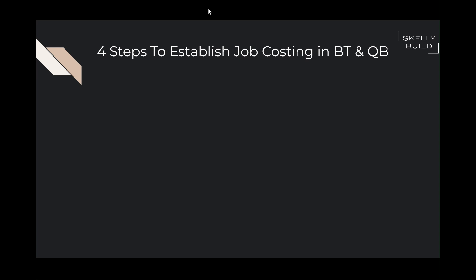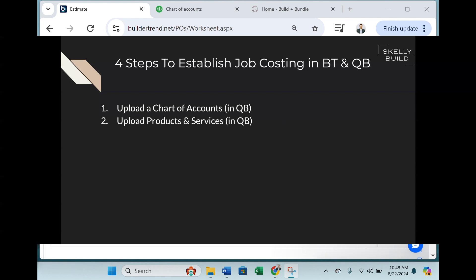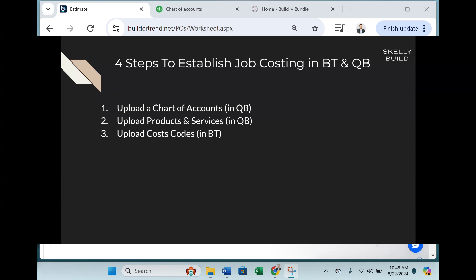So let's dive into it. There are four steps to setting up job costing between BuilderTrend and QuickBooks, and I'm going to walk you through these four steps and provide you with the Excel templates you need to accomplish this. The four steps are: step one, upload a chart of accounts in QuickBooks; step two, upload products and services in QuickBooks; step three, upload cost codes in BuilderTrend; and step four, manage the QuickBooks cost codes in BuilderTrend.